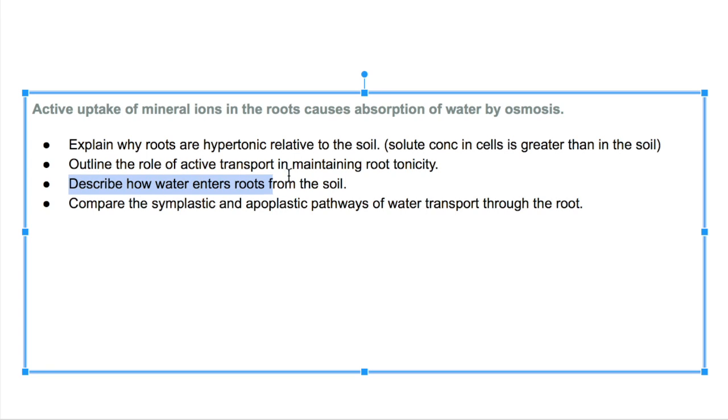Active transport helps maintain the hypertonic solution because energy is used to actively transport mineral ions inside the roots. This assessment statement is what my next video will be about. We said that the symplastic goes through the cytoplasm and the apoplastic pathway goes through the cell wall. Which one is faster? The apoplastic pathway is definitely faster because in the cytoplasm, you are encountering all these organelles.